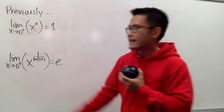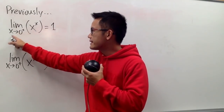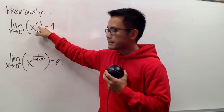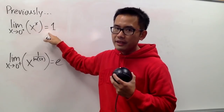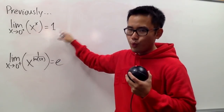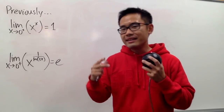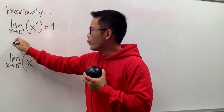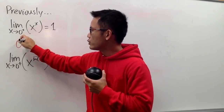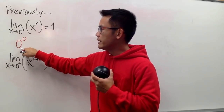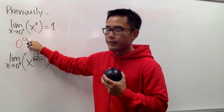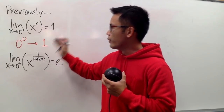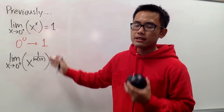Previously, I showed you guys that the limit as x goes to 0 plus of x to the x power is equal to 1.